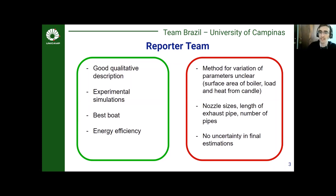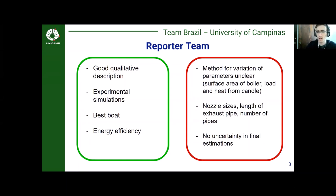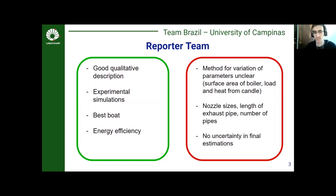The simulations were well chosen to verify, for instance, the oscillations in pressure — a very creative method. They sought to find the best boat, which is in good agreement with what the problem required, and they found a reasonable estimate for energy efficiency. However, the method for variation of parameters was a bit unclear. They showed three consecutive graphs discussing surface area of the boiler, the presence of a load, and heat from the candle, but it wasn't clear what other parameters were being held fixed to calculate the final velocity from just one of these parameters.